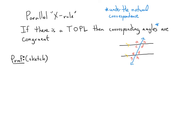The Parallel X Rule says: if there is a transversal of parallel lines, then the corresponding angles are congruent, under that natural correspondence where angles in the same position across the X's correspond to each other.